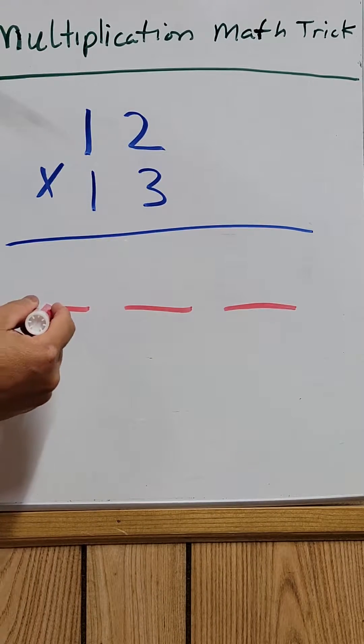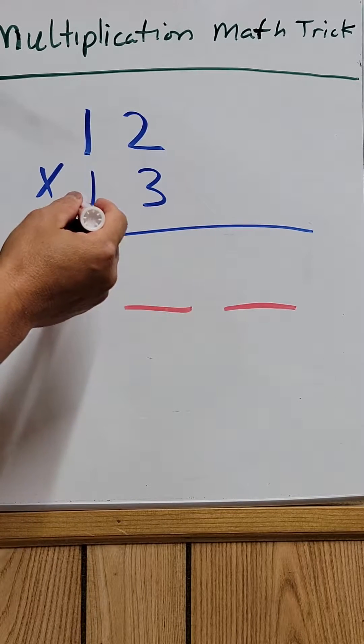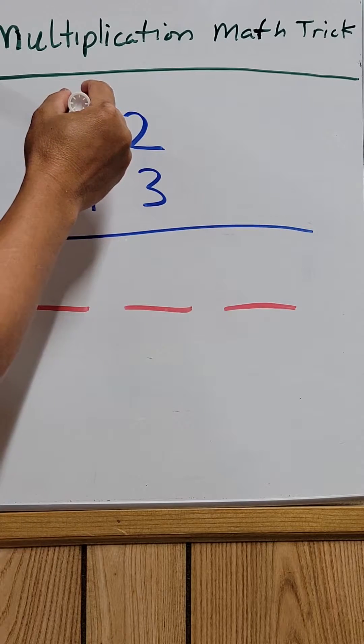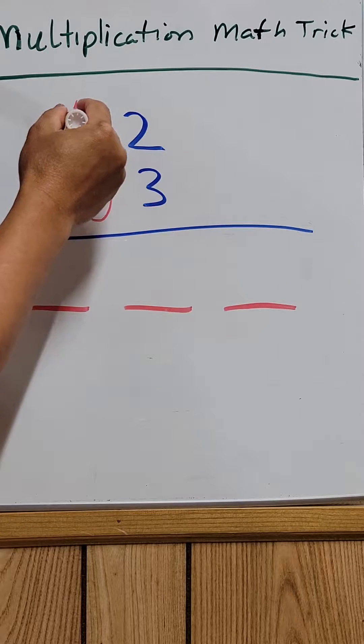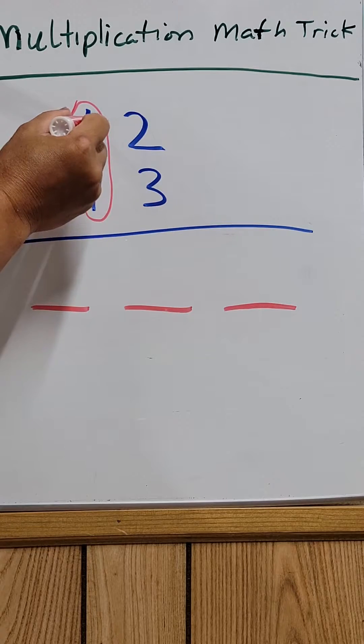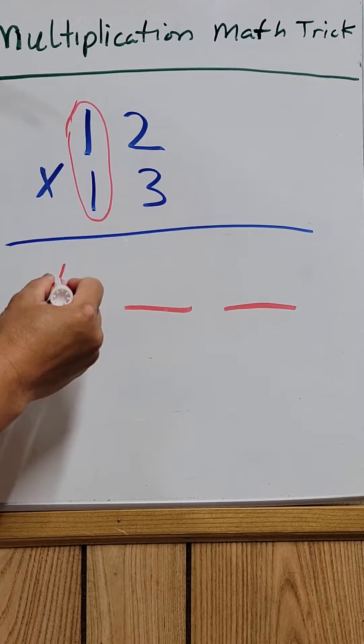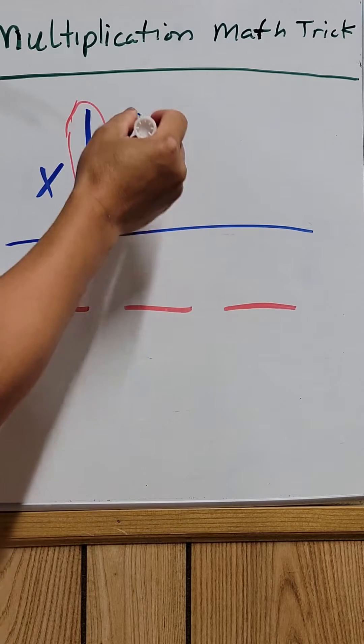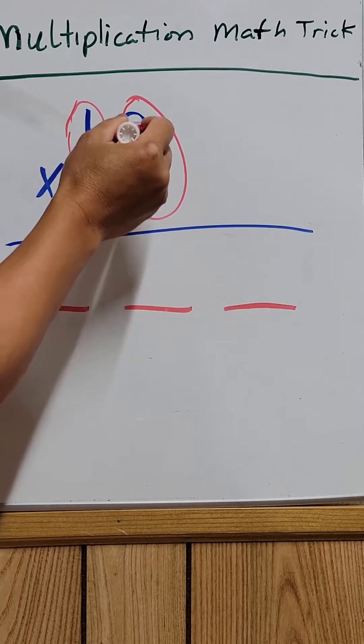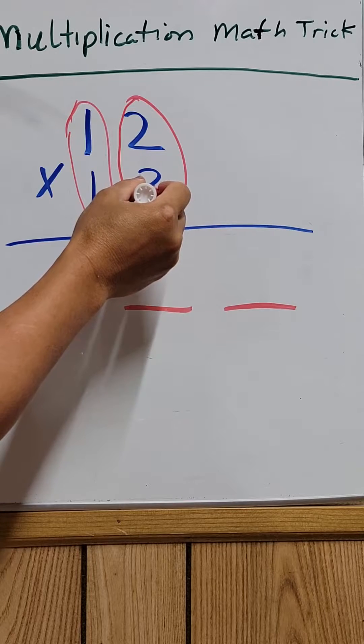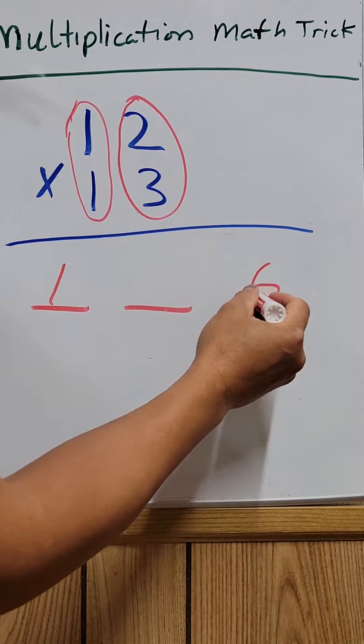All right, we have three different slots right here. So the first slot will be this one. 1 times 1 equals 1. And the third slot will be this one. 2 times 3 will be 6. You write down 6 over here.